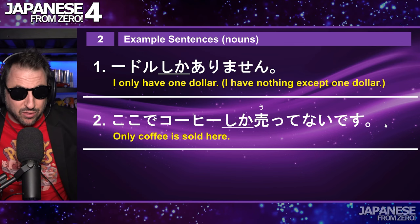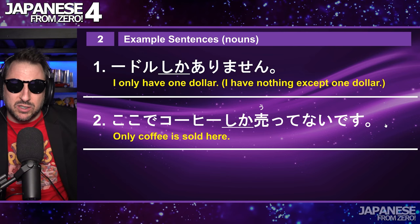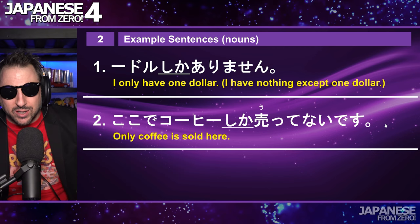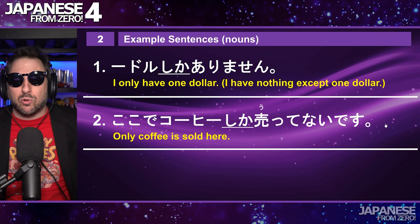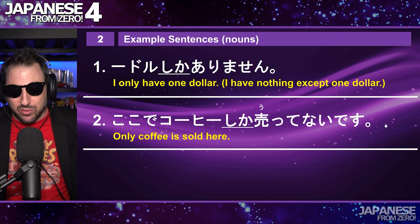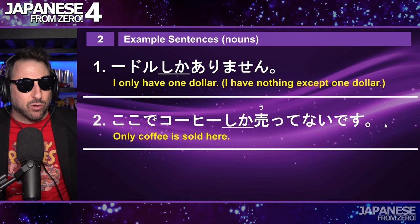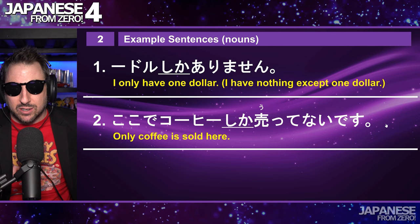ここでコーヒーしか売ってないです. That doesn't necessarily mean they don't sell crackers or cookies — it just means, if you went in there to buy tea, for example, you'd say 'oh man, they only have coffee.' It just means they only sell coffee here. Don't think about it too hard. I would say, translate it naturally: 'they only sell coffee here.' That is much more in line with what we say in English. The only difference is Japanese has this particular way of expressing it.